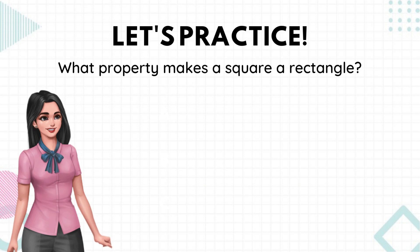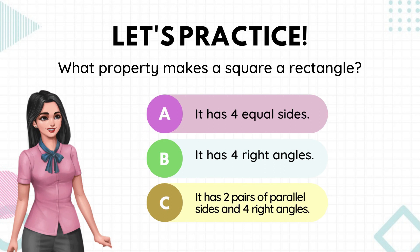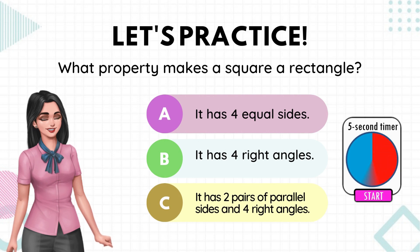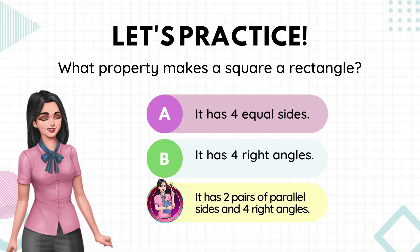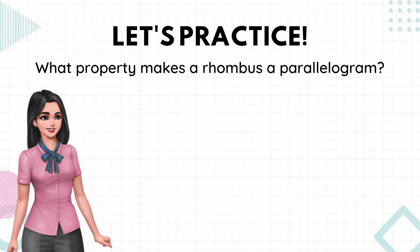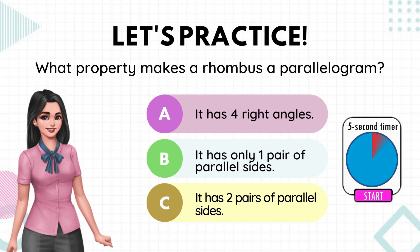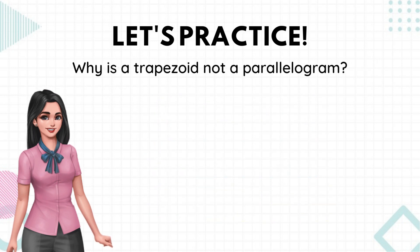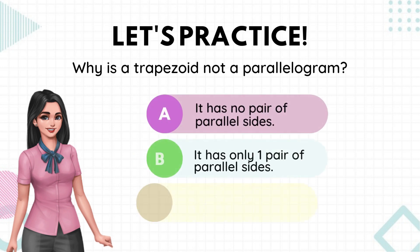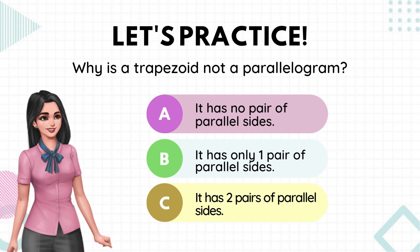What property makes a square a rectangle — it has four equal sides, it has four right angles, or it has two pairs of parallel sides and four right angles? What property makes a rhombus a parallelogram — it has four right angles, it has only one pair of parallel sides, or it has two pairs of parallel sides? Why is a trapezoid not a parallelogram — it has no pair of parallel sides, it has only one pair of parallel sides, or it has two pairs of parallel sides?